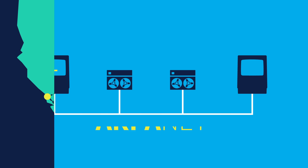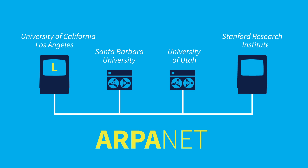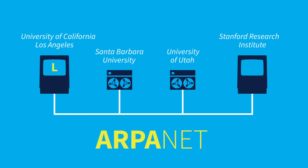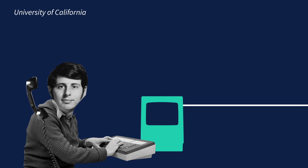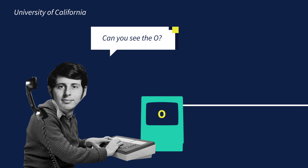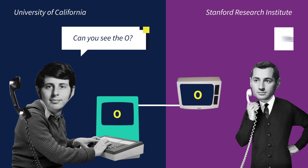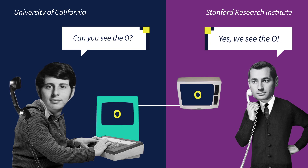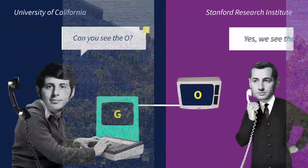Only then, it was called the ARPANET. It consisted of four nodes at different universities, and the first letter was sent from UCLA. There, they tried to send a second letter. Can you see the O? they ask. The O is confirmed. But when they try to send the third letter, the system crashes.